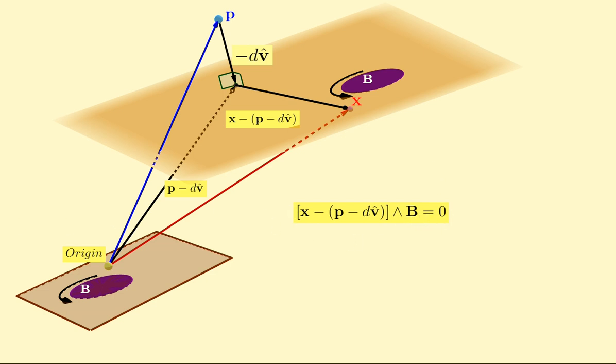Now we can go a little further there and obtain something that might also be useful. The idea here is that X minus P minus DV wedged with B again is zero. And we can rearrange that to get X minus P wedged with B is the distance, the scalar distance here, times V hat wedged with B.